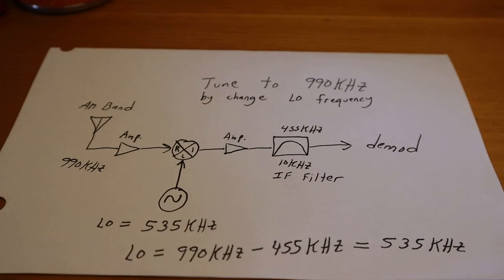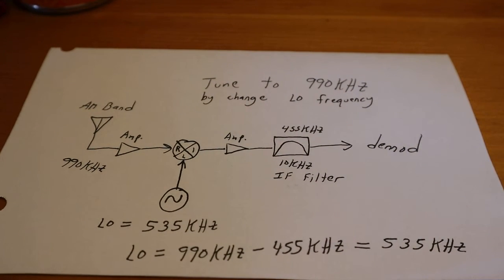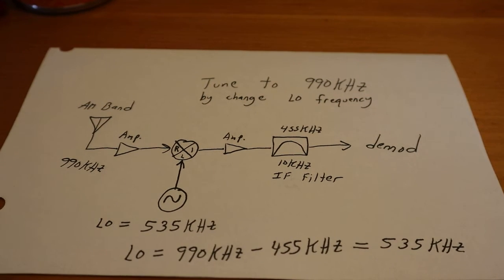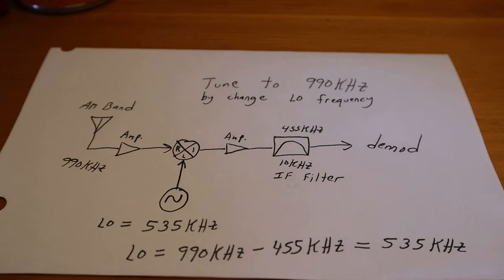So hopefully you guys can get an appreciation for what is IF frequency, why it's used, and how valuable it is. And this is what's often called the super heterodyne receiver, but it is still the main architecture of receivers today.